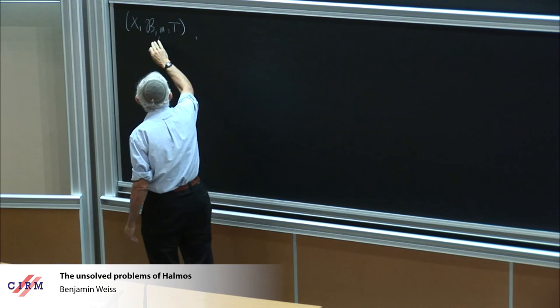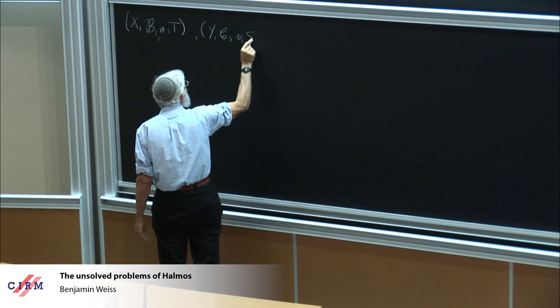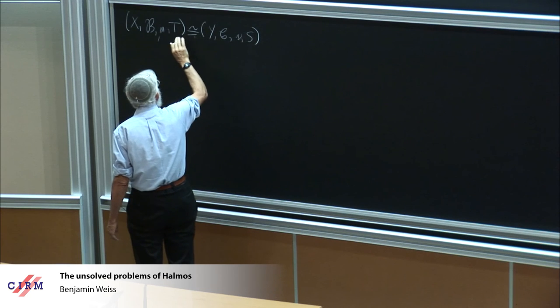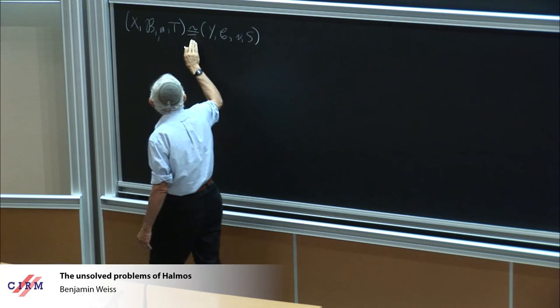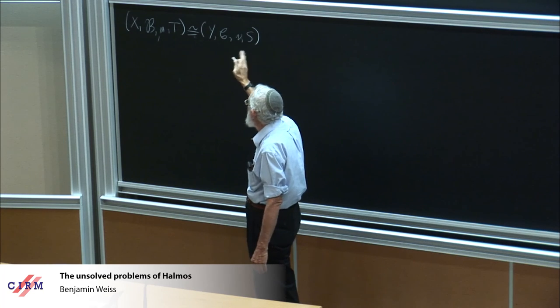And Halmos is using the algebraic terminology of conjugacy, whereas today we speak usually of isomorphism. So he's thinking of two measure-preserving transformations, X, B, mu, T, finite measure space, Y, C, nu, S. And these are conjugate, or as we say today, isomorphic, if there's a measure-preserving invertible mapping between these systems that intertwines the action of T and S.